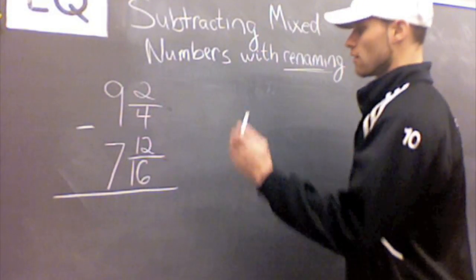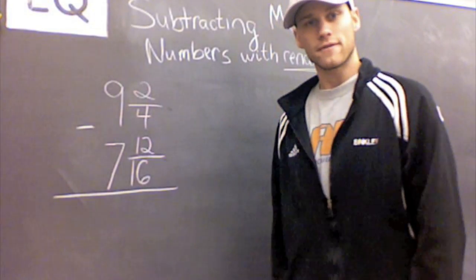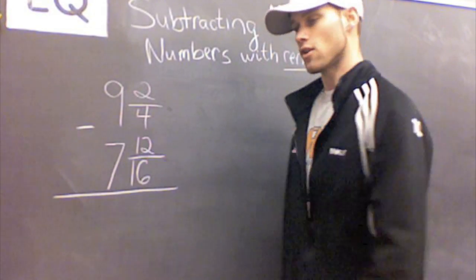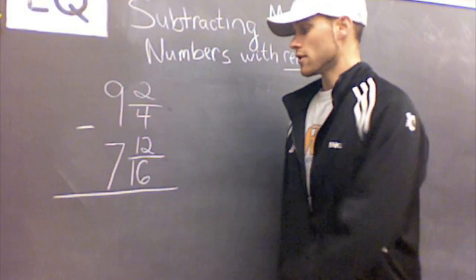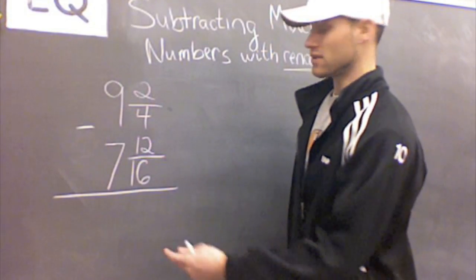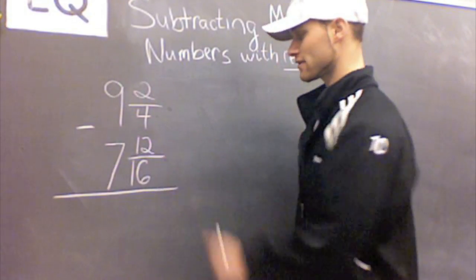So in every subtraction problem, the very first thing that we start with is always on the right side. Looking at this problem, on the right side we have our fractions, which would be 2 fourths and 12 sixteenths.